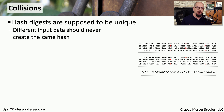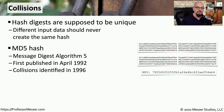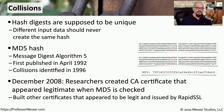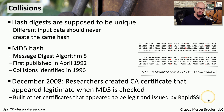Collisions are bad because hashes are always supposed to be a unique value. If you put in one type of plain text, it should produce a unique hash; if you put in a different plain text, it should never produce exactly the same hash. One well-known collision occurred with MD5 — the Message Digest algorithm version 5, first published in April 1992. Collisions were identified in 1996, and in December 2008, researchers created a certificate authority certificate that appeared legitimate when checked against the MD5 hash, effectively creating a fake CA that looked completely legitimate.